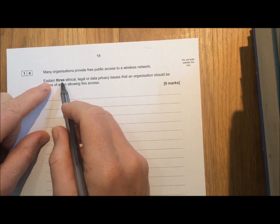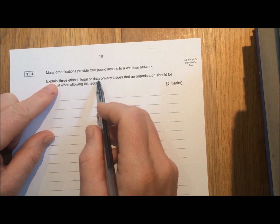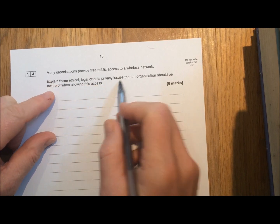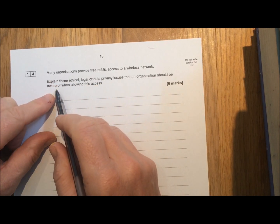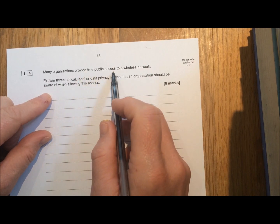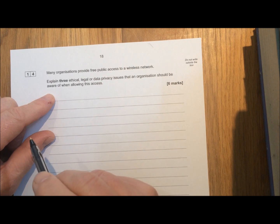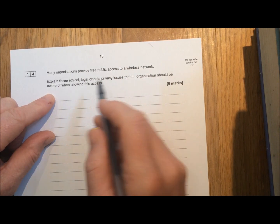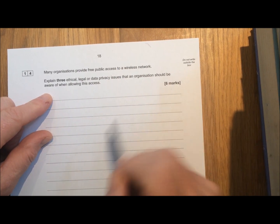This one's got six marks. It asks you to explain three ethical, legal, or data privacy issues that an organisation should be aware of when allowing access. It says here about providing free public access to a wireless network. So three issues, six marks.